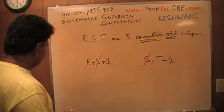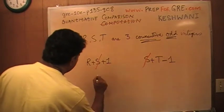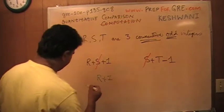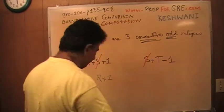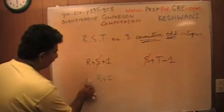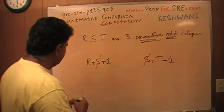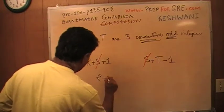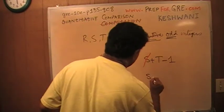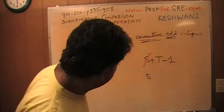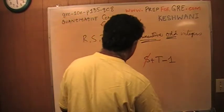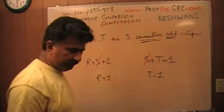So basically what we are asked to compare is the quantity R plus 1 versus T minus 1. Let's see what we can do.